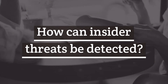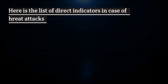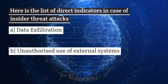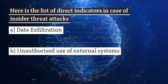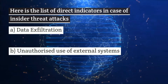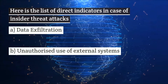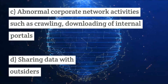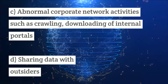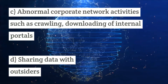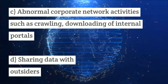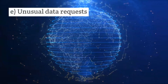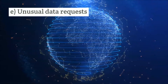How can insider threats be detected? Here is the list of direct indicators in case of insider threat attacks: A. Data exfiltration. B. Unauthorized use of external systems — USB, tablets, laptops. C. Abnormal corporate network activities such as crawling and downloading of internal portals. D. Sharing data with outsiders. E. Unusual data requests.